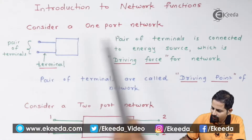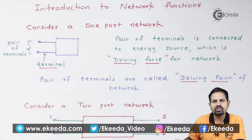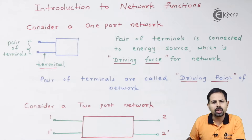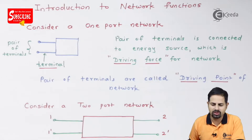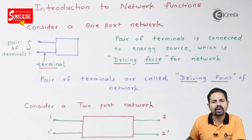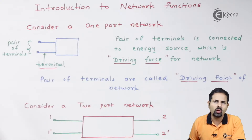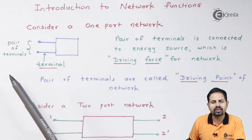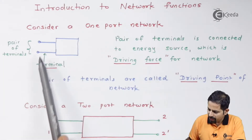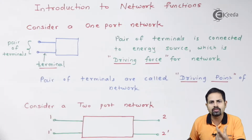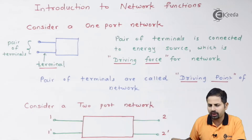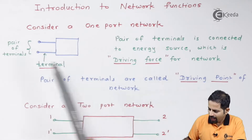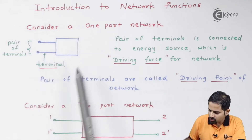Here I have considered a one-port network. A one-port network has a pair of terminals where you can attach the input — it is connected to an energy source. No network can work without an energy source. This pair is connected to an energy source called the driving force for the network, because it drives that network. These pair of terminals, shown in blue, are called the driving point of the network.